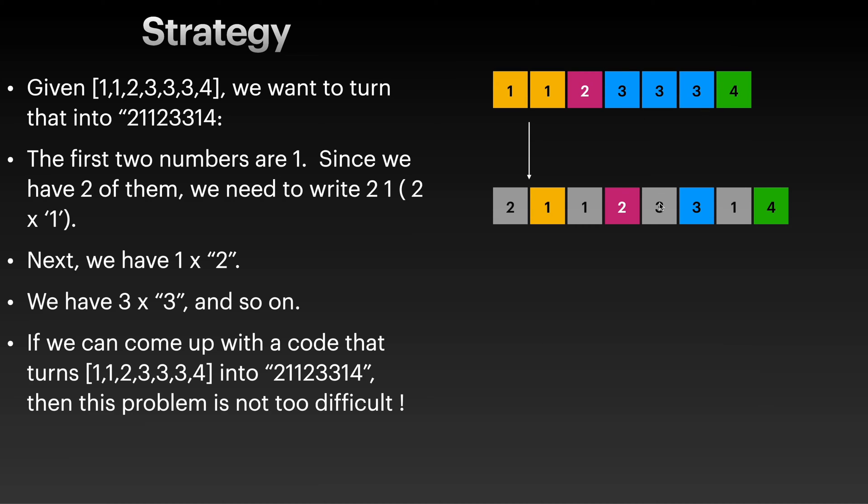How many threes do we see here? We see three, so we have 3 and 3. How many fours do we see? We only see a single instance of 4, so that's why we have 1 and 4. Basically, if you know how to turn this into this, then I think you can solve this problem quite easily.